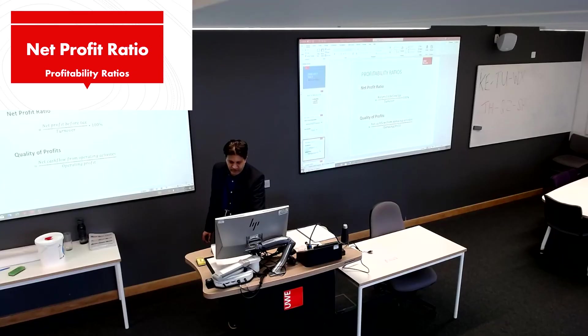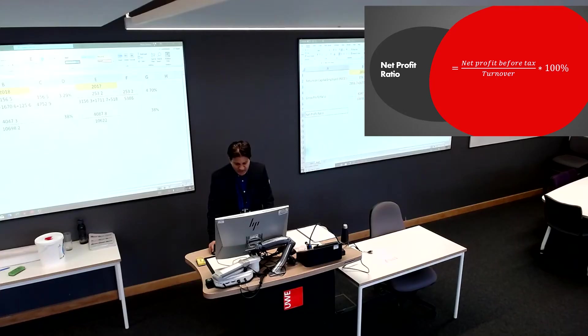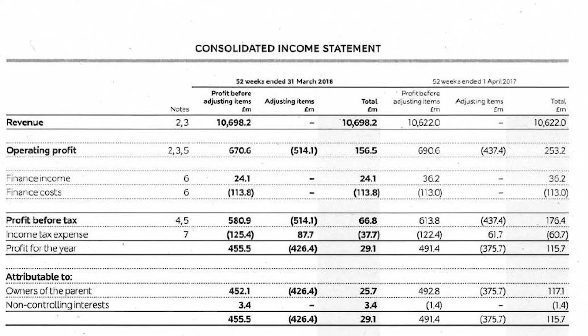Net profit ratio. Profit before tax and turnover can both be found in the income statement. Profit before tax is given clearly: 66.8 and 176.4. Turnover we have already used.